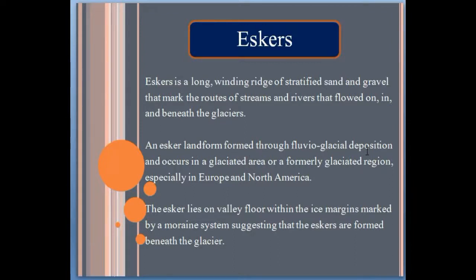Eskers occur in a glaciated area or a formerly glaciated region, especially in Europe and North America. The esker lies on the valley floor within the ice margin marked by a moraine system, suggesting that eskers are formed beneath the glacier.